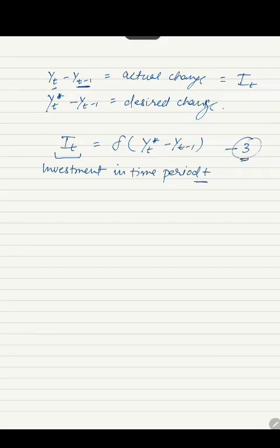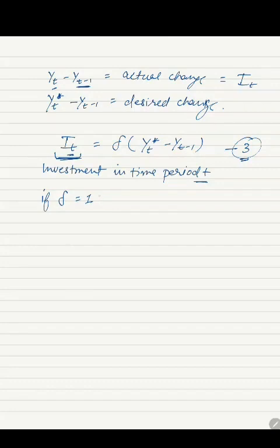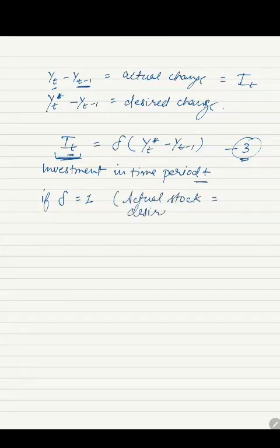This third equation postulates that actual change in capital stock, that is investment, in any given time period T, is some fraction delta of the desired change of that time period. If delta is equal to 1, it means the actual stock of capital is equal to the desired stock — that is, the actual stock adjusts to the desired stock in the same time period.